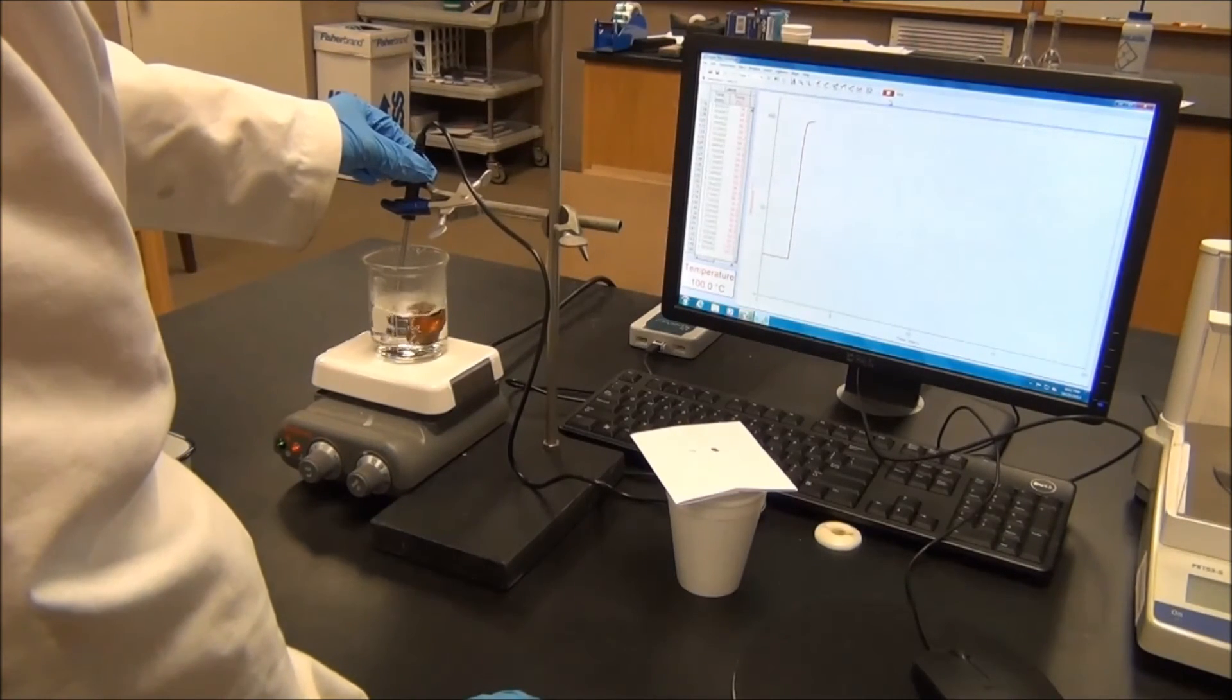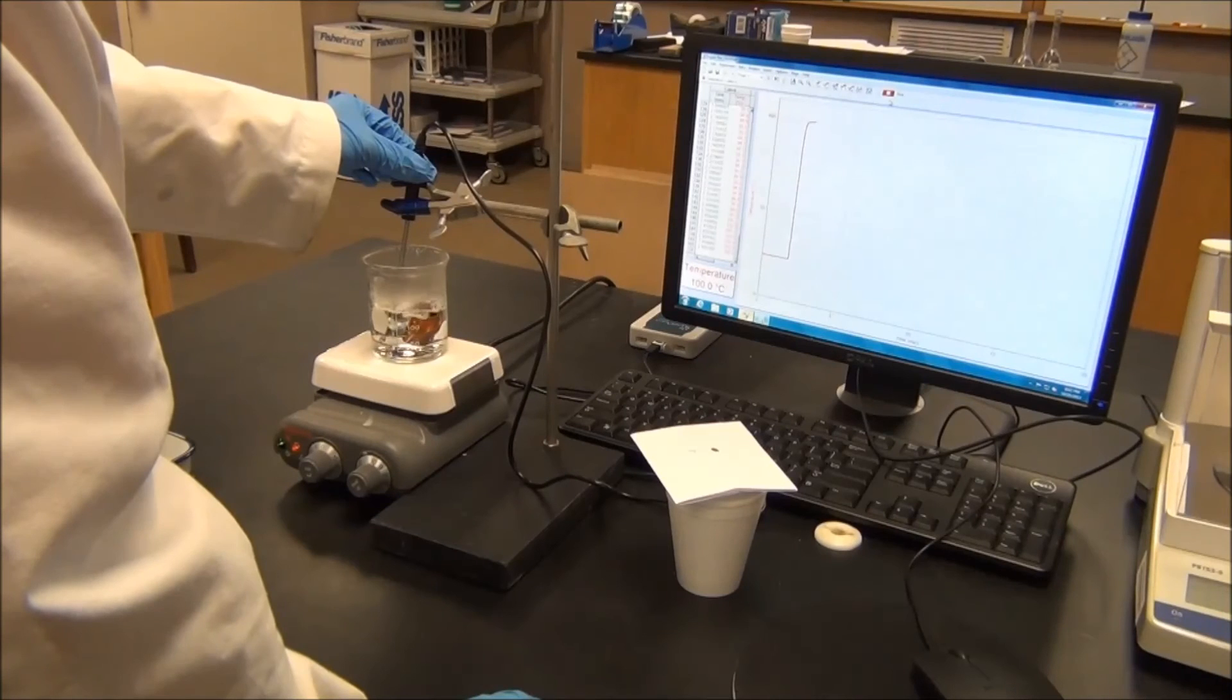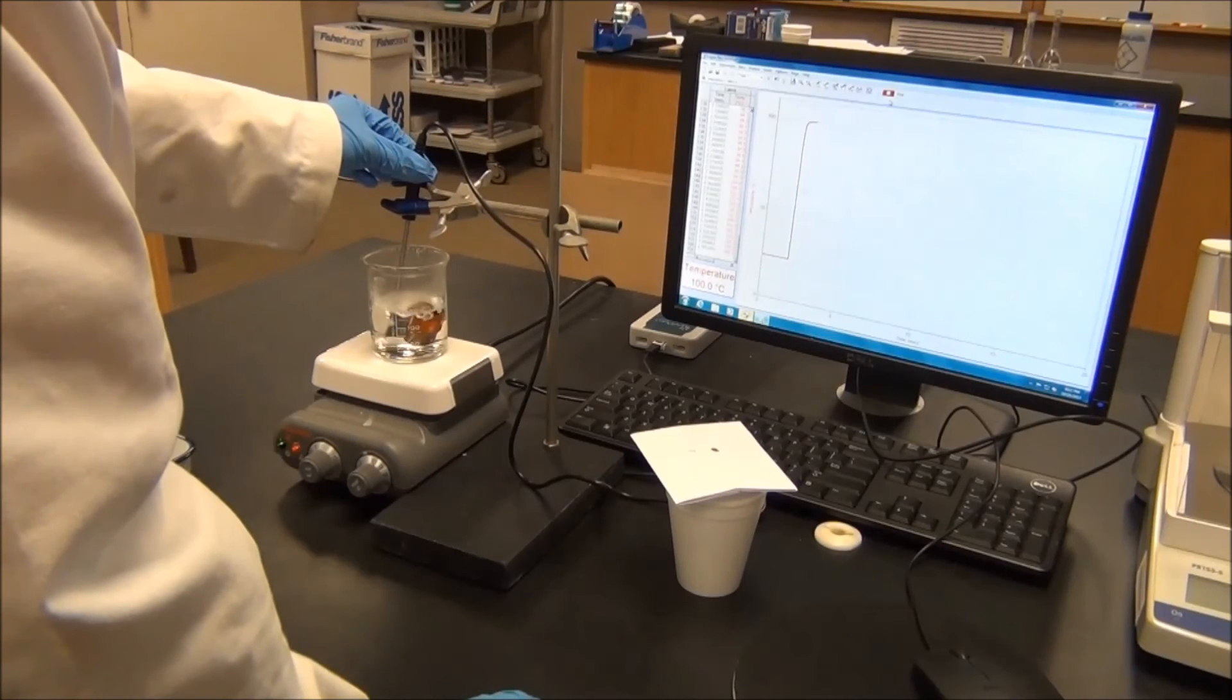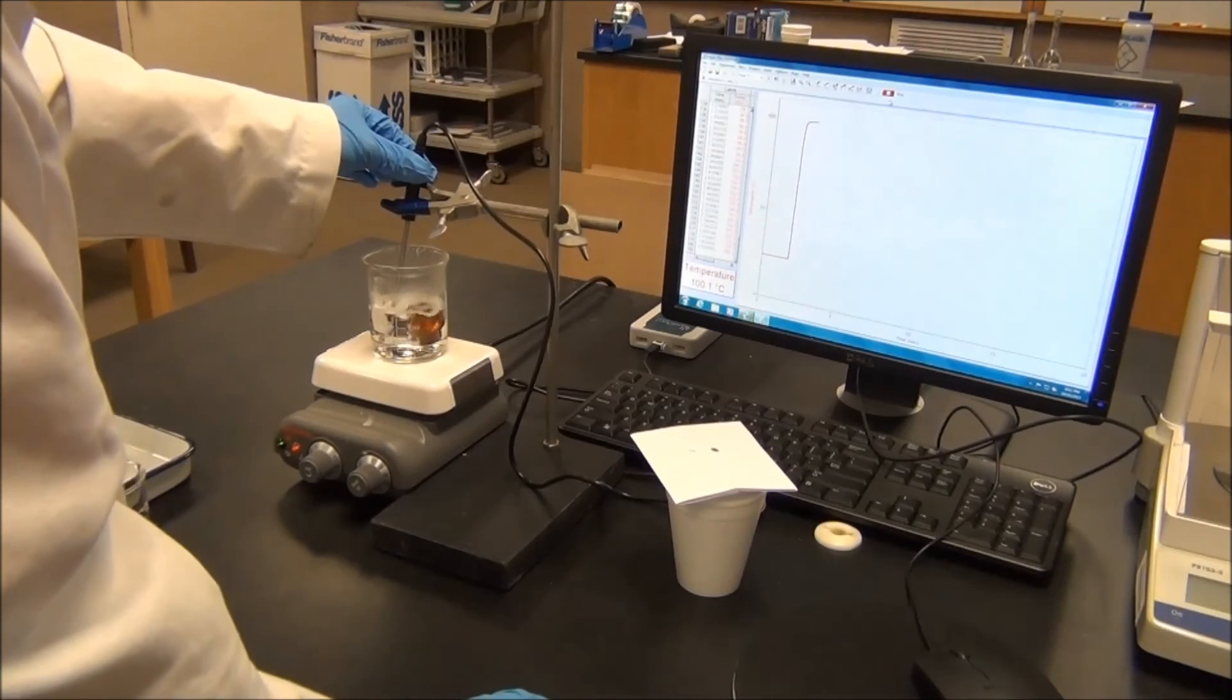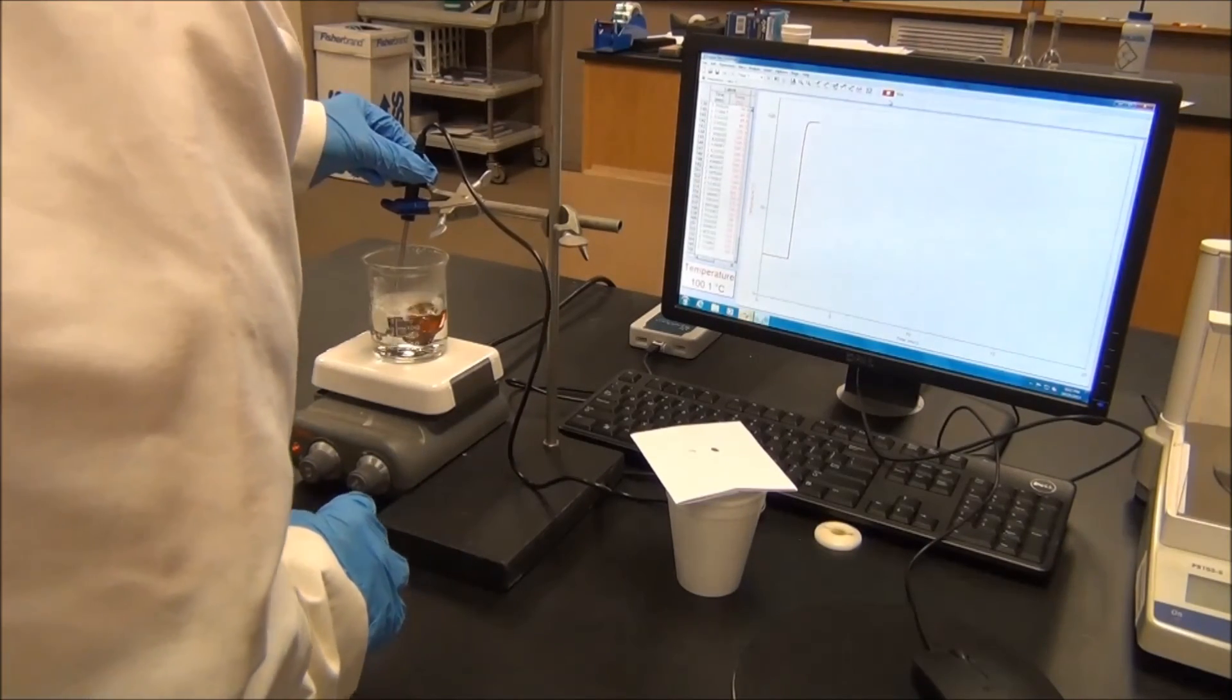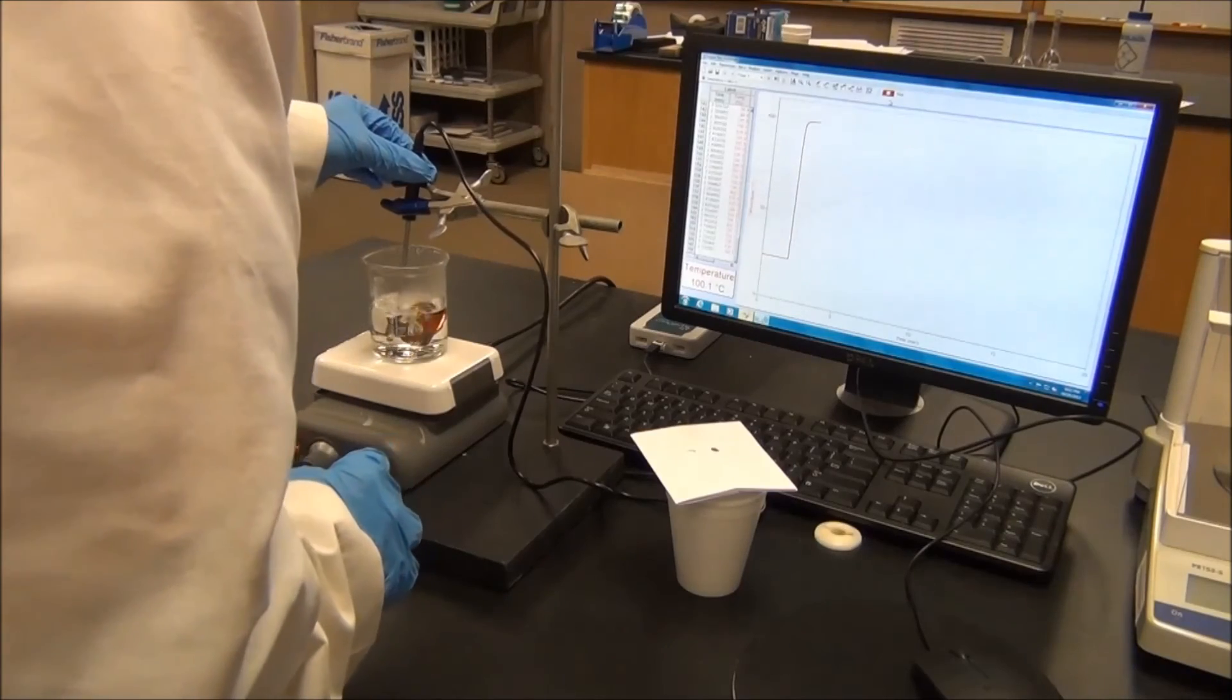And make sure for your temperature probe, do not touch the bottom of the glass beaker. Because that temperature may be different than the temperature of water. Which we assume the temperature of the metal piece is the same as the temperature of water. Right now, from the screen, we can see that the temperature reading is pretty constant. So we will take out the temperature probe.